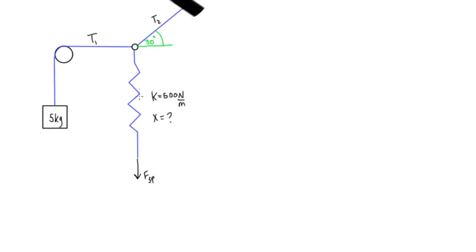All right, so what we're looking at here is we have a spring pulling down on this ring, we have rope with the tension T2 pulling up at 30 degrees, and we have this other rope pulling in this direction with tension T1, and it has a 5 kilogram mass on the end.